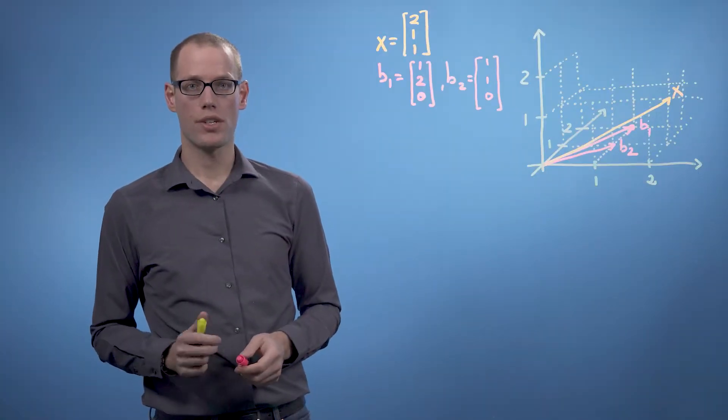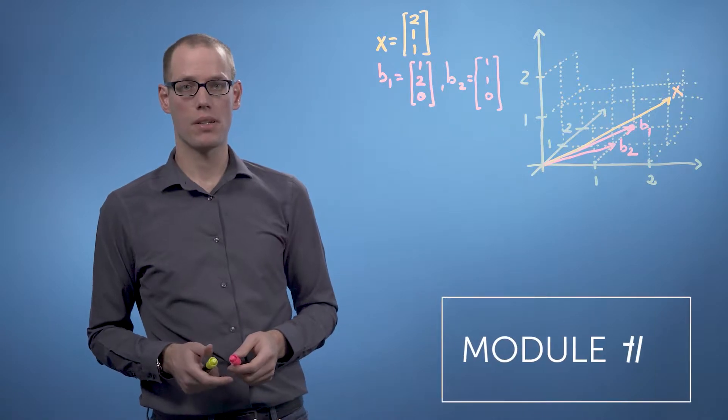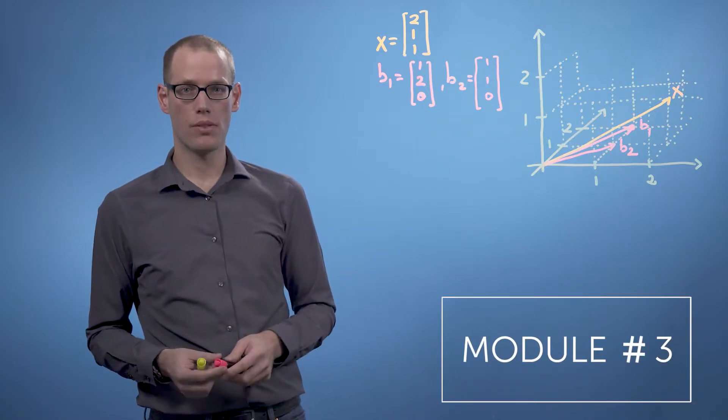In the last video, we derived orthogonal projections of vectors onto m-dimensional subspaces. In this video, we'll run through a simple example.